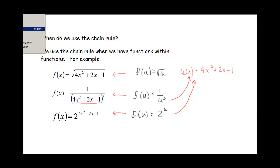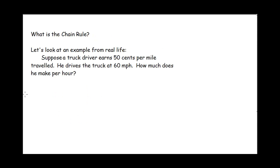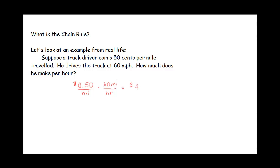Let's very simply see why this is with a basic example. Suppose we have a truck driver that earns 50 cents per mile traveled, and he drives at a rate of 60 miles per hour. How much does he make per hour? If he makes 50 cents per mile and he drives 60 miles per hour, then his pay rate is going to be 0.5 times 60, so that's $30 per hour.